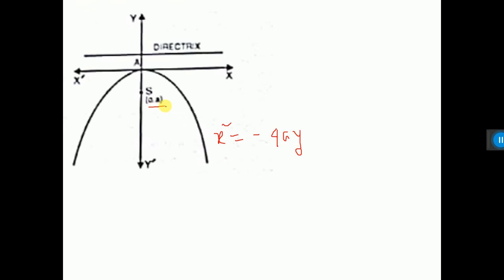For this parabola, the focus is at (0, minus a), because it is going in the negative direction. The directrix equation is parallel to the x-axis, so y equals plus a. The latus rectum equation is y equals minus a.